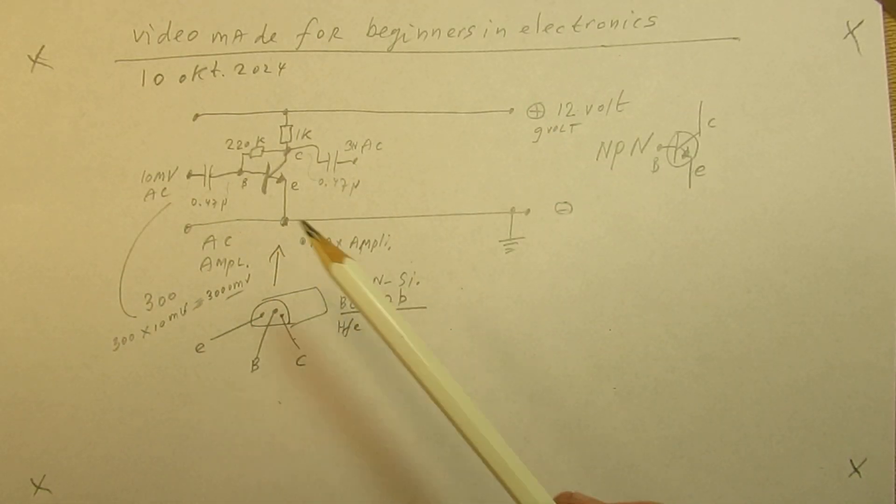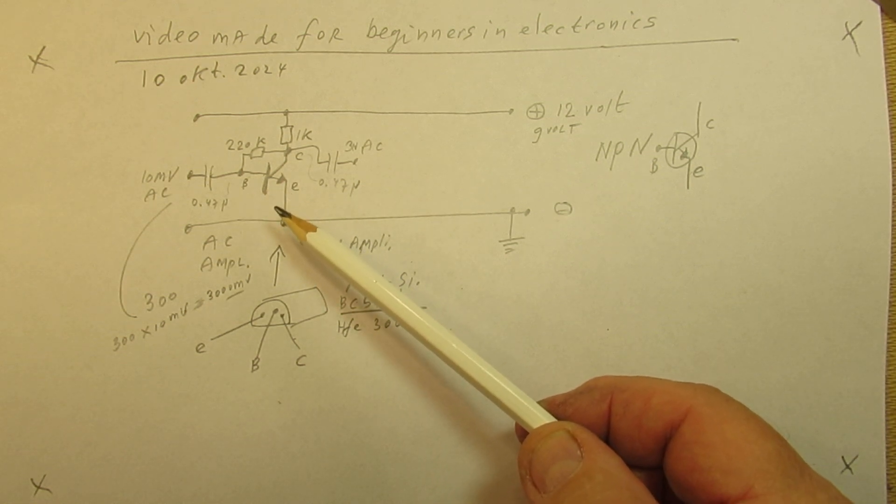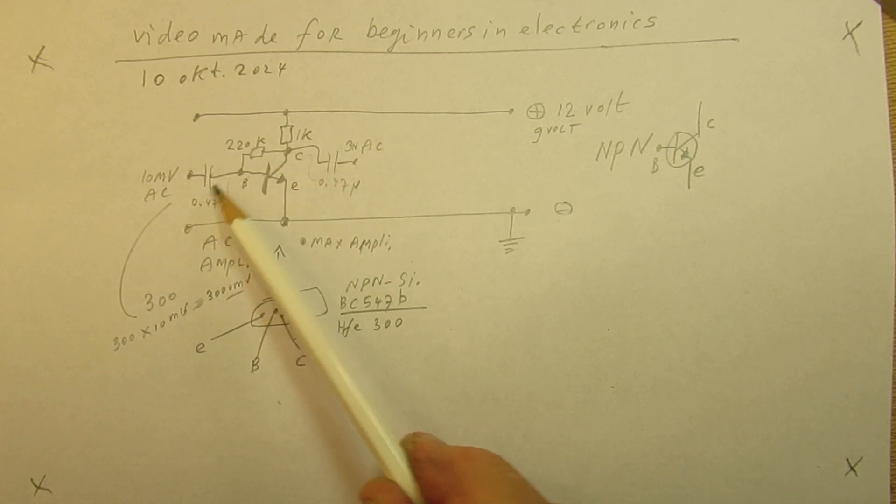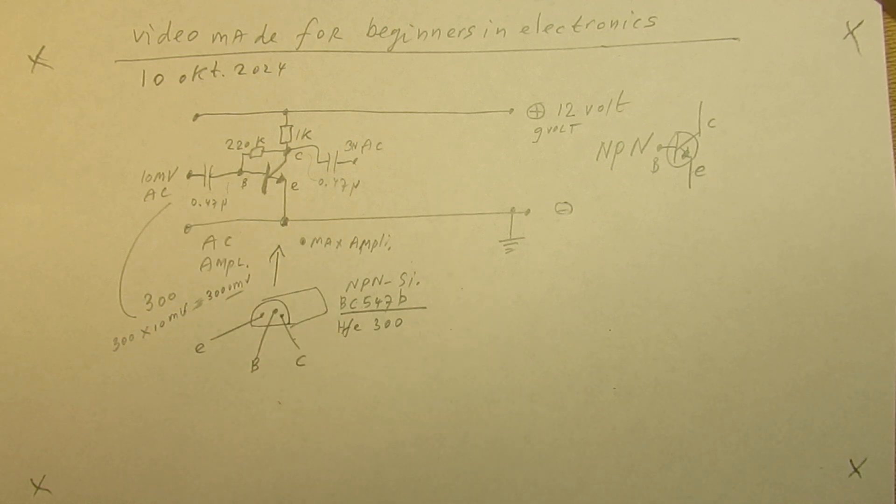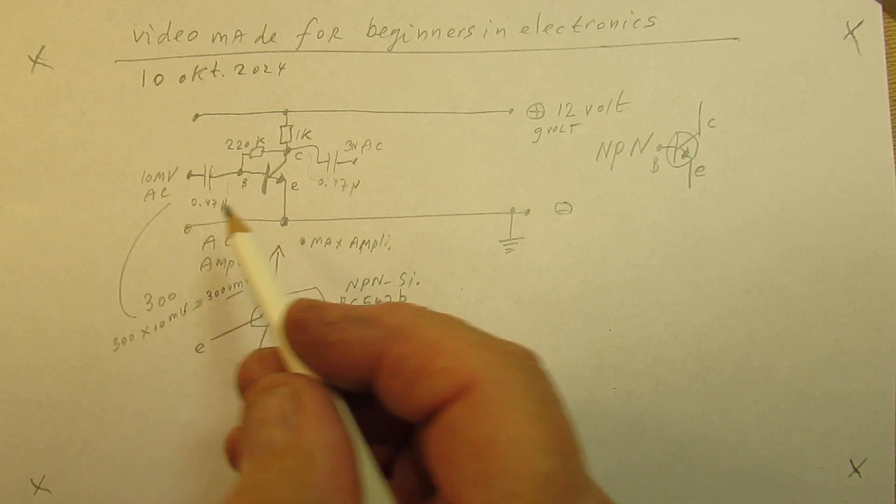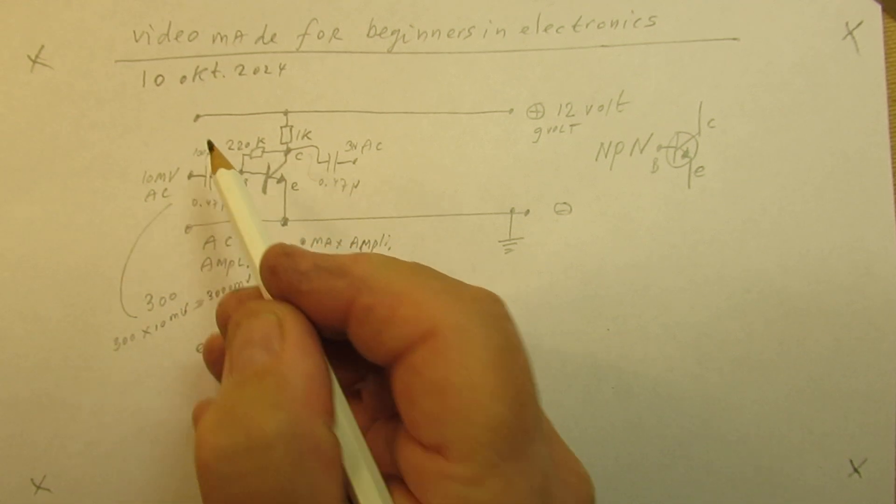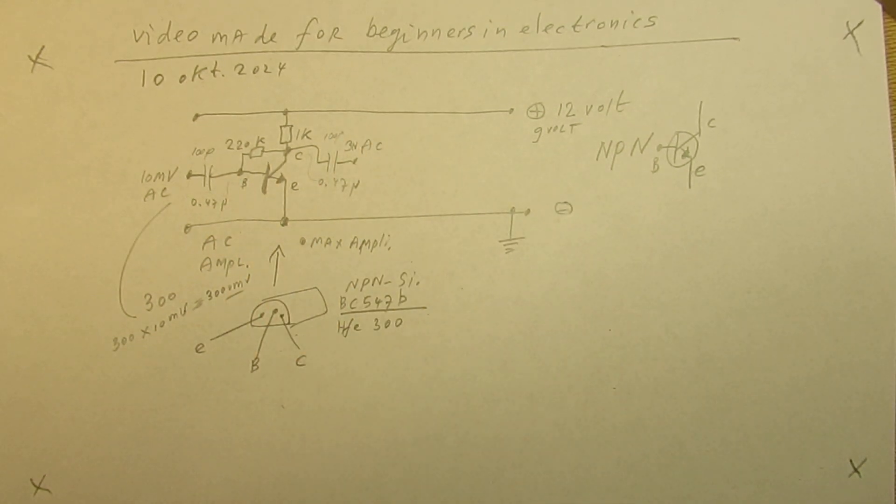You can use here a low frequency transistor BC507B or a high frequency transistor. You can change the capacitor values here and here. Now it is 0.47 microfarad for audio circuits. For high frequency circuits this could be for instance 100 picofarad and also here 100 picofarad. In that case you have a high frequency amplifier in its most basic and simple way.